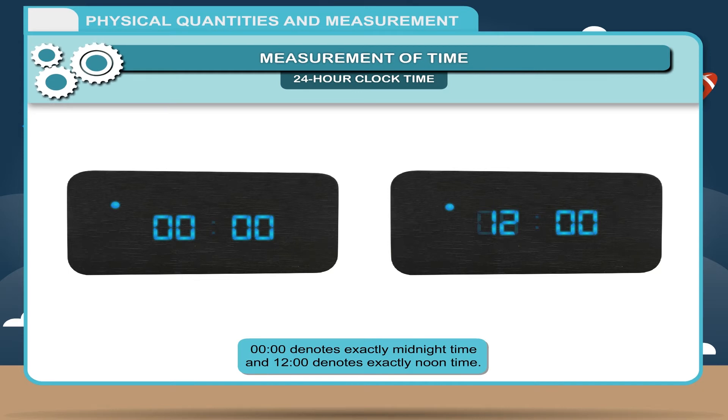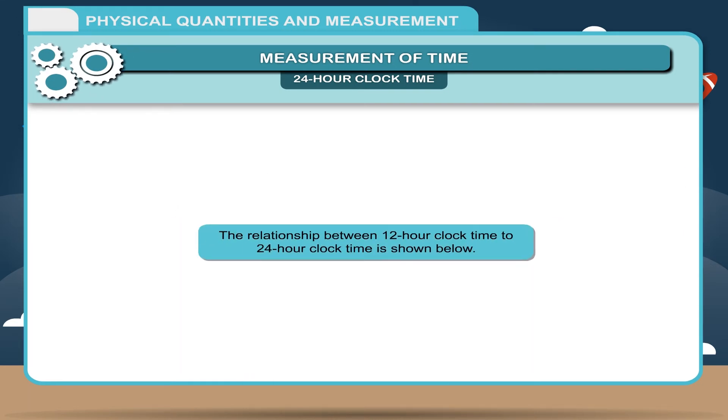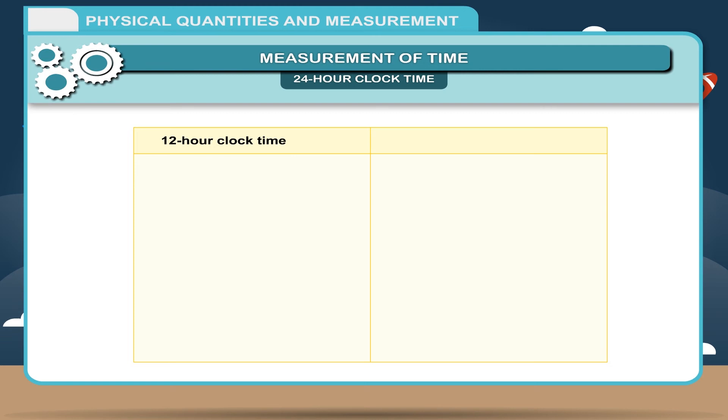The relationship between 12 hour clock time to 24 hour clock time is shown below. 12 hour clock time to 24 hour clock time: 1 AM is 1 hour, 4 AM is 4 hours, 6:30 AM is 6:30 hours, 12 noon is 12 hours, 1 PM is 13 hours, 10:45 PM is 22:45 hours.